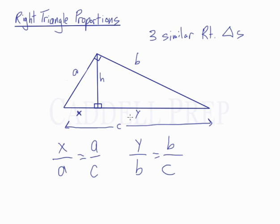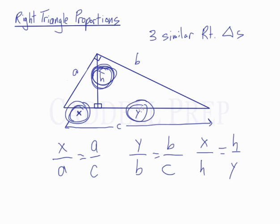Our third proportion involves the height. We have X over H equals H over Y. So we have X over H equals H double tapped over Y. X over H, H over Y. That's our third proportion.